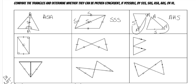This one has a side in common and is a right triangle, so first always check hypotenuse-leg. This is the hypotenuse and this is the leg, so this is hypotenuse-leg. Any time you have vertical angles, they will also be congruent. In this case we have side-side-angle — remember, we do not curse in math — so this one does not prove congruence.